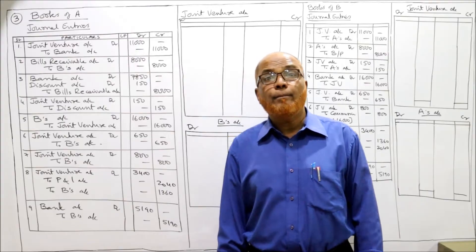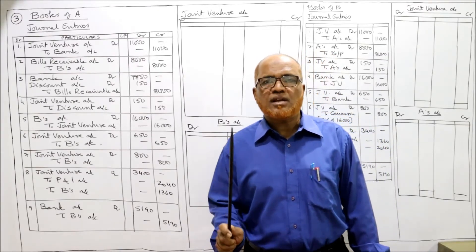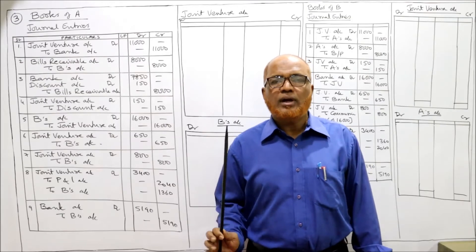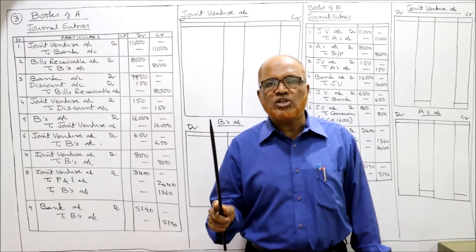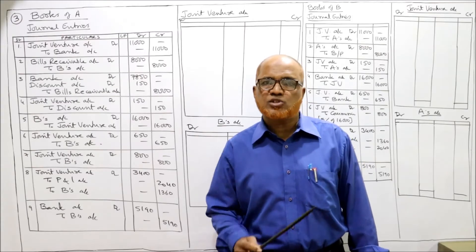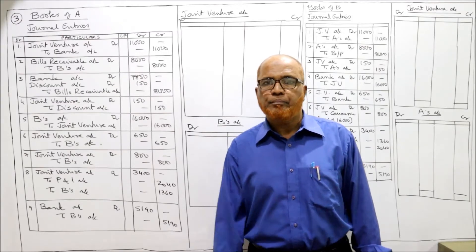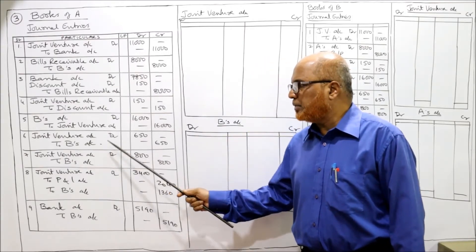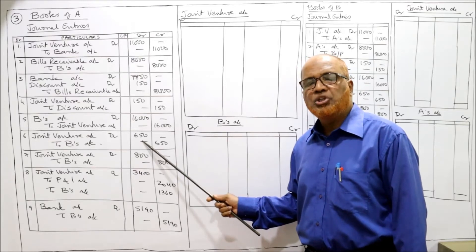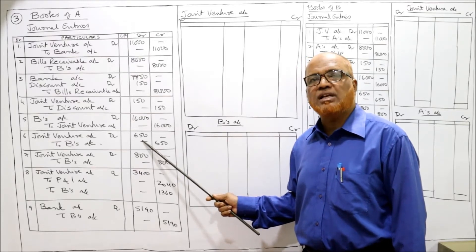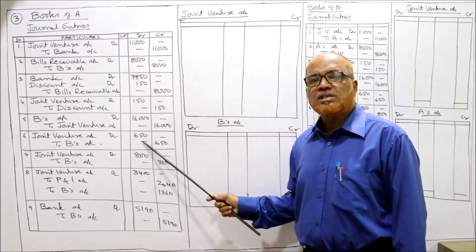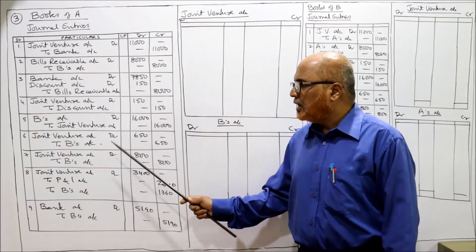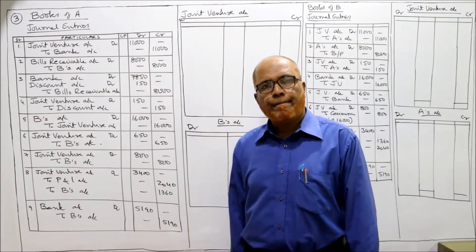B has spent some expenses - 350 rupees for fire insurance and 300 rupees for rent. These are the expenses paid by B. Entry: Joint Venture Account Dr. to B's Account - 650 rupees (350 plus 300) - being the expenses paid by B.